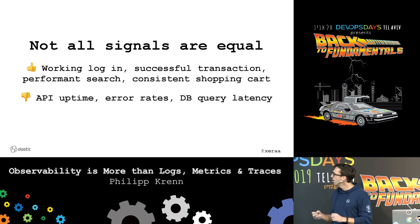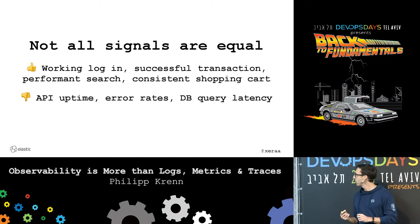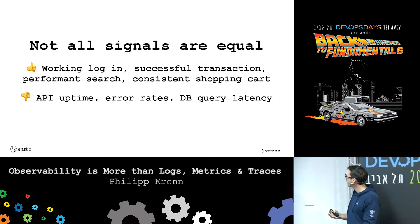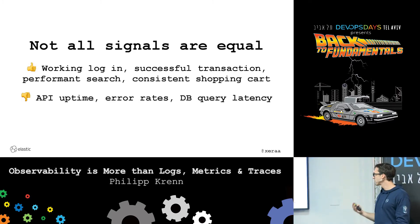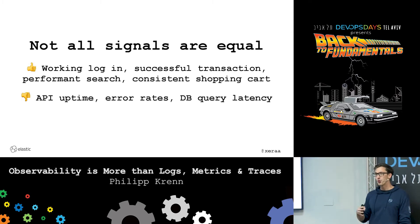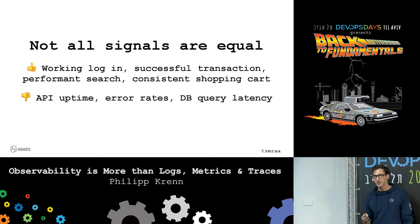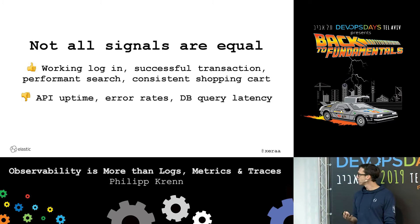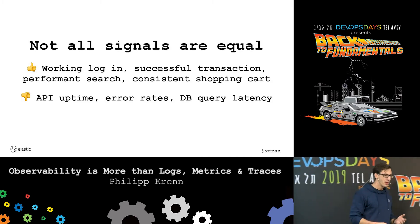Not all signals that you could be collecting are equal. Some stuff that you and your users probably care about is: can people log in? Can they do a successful transaction? Can they give you money? Can they do a search within a certain response time? Can they put something in a shopping cart and is the shopping cart consistent? What your users don't really care about is if an internal API is slower or not — probably the users don't see or care. Elevated error rates, as long as users are not affected and you have built-in retries, why would a user care? Or just the database query latency — if that doesn't affect the user, they don't really care.